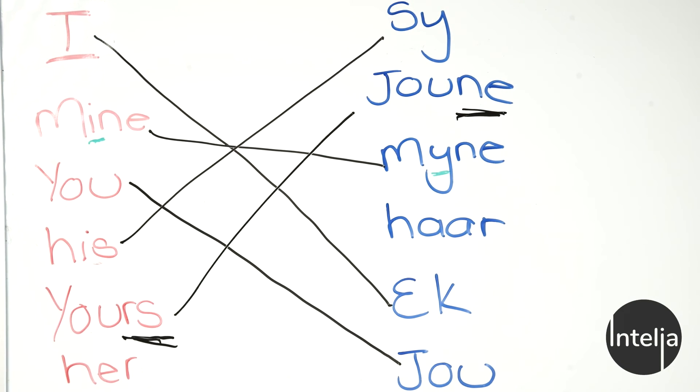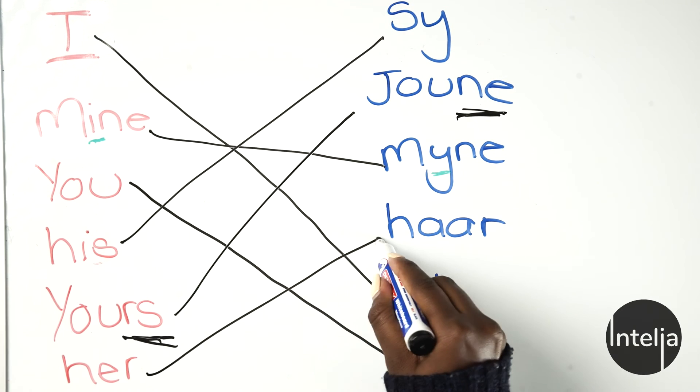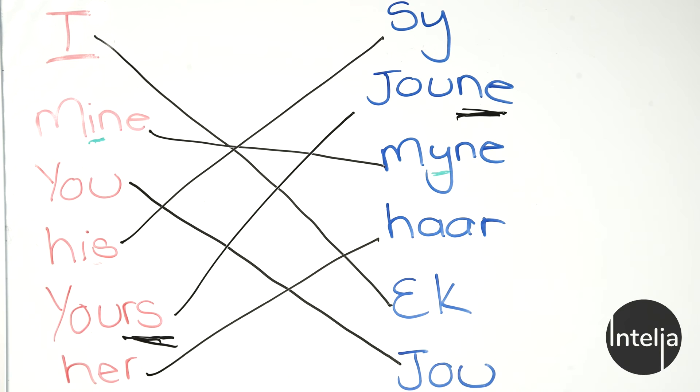Now we have her. What does her mean in Afrikaans? And we only have one more word left on the side, so what do you think it is? That's right, haar. So we're gonna match her and haar. Now we've reached the end of our words. There is one word that is incorrect.